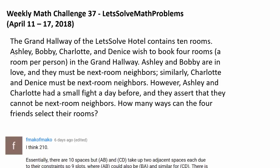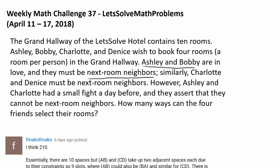We have four friends: Ashley, Bobby, Charlotte, and Dennis. Ashley and Bobby are in love and must be next-room neighbors in this grand hallway of Let's Serve Hotel, which contains 10 rooms. So we have to make sure we put Ashley and Bobby next to each other. In the same way, Charlotte and Dennis are in love and must be next-room neighbors as well.